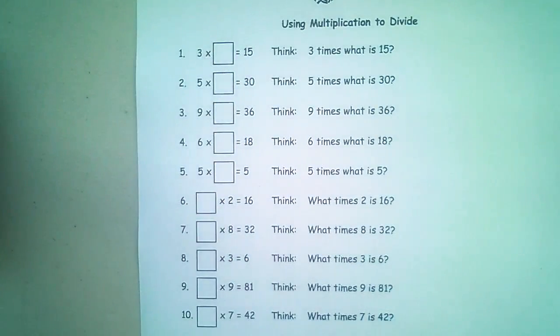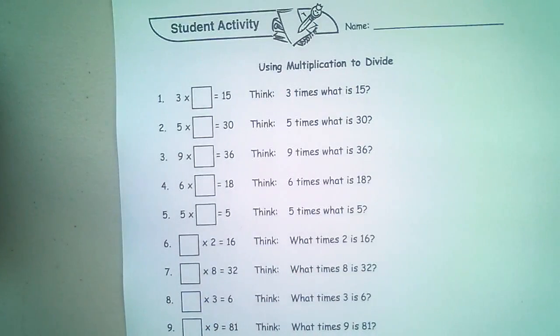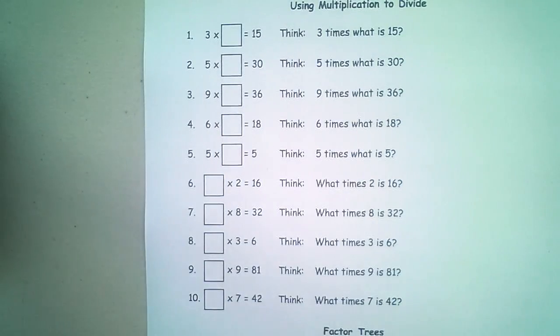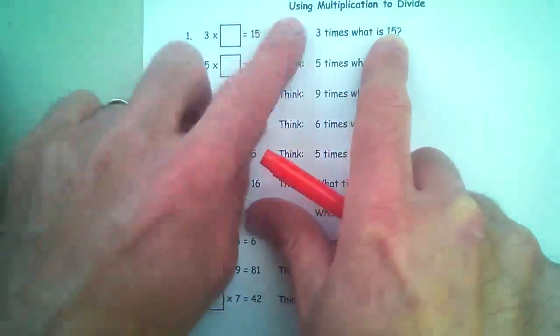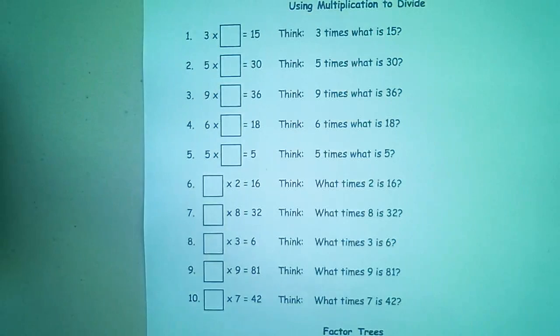All right. Now, on page 130, they're basically just showing you the connection between multiplication and division. And basically, what they're saying, so 3 times what, you think, 3 times what is 15, that's in your head. And that's what I'm saying, if you've been practicing your times tables, you're just like, bam, bam, bam.